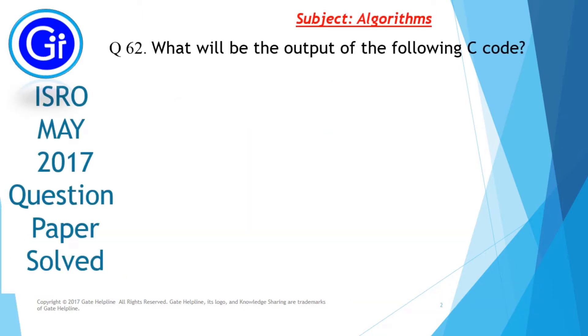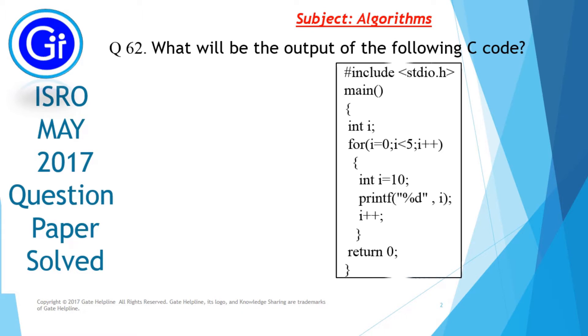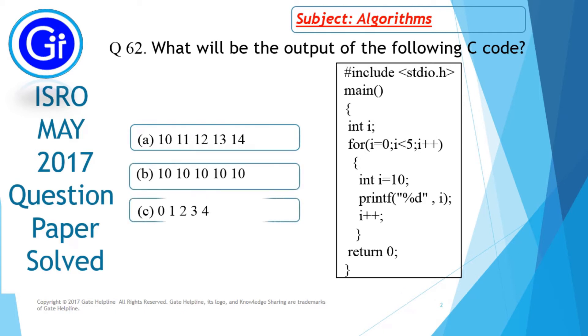Question number 62 is what will be the output of the following C code. This is the C code and the options are A, B, C and D.